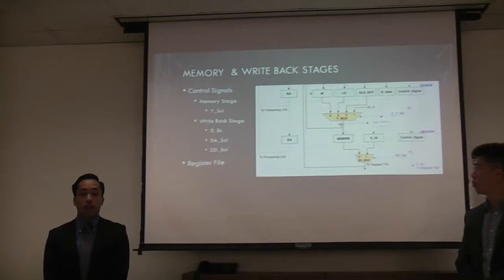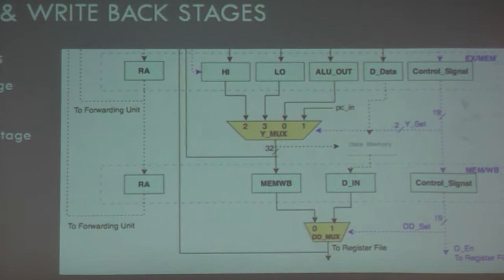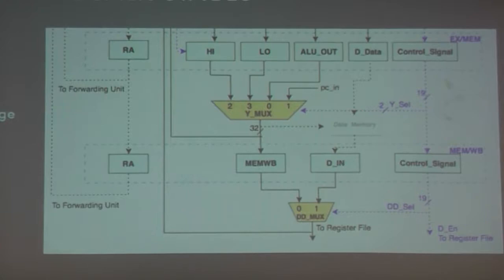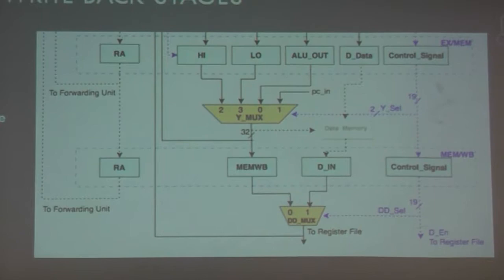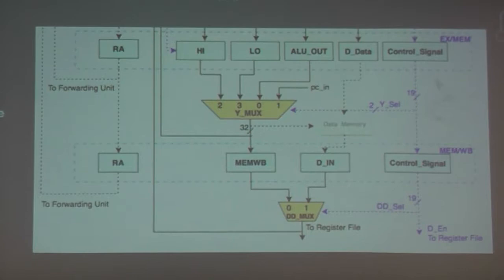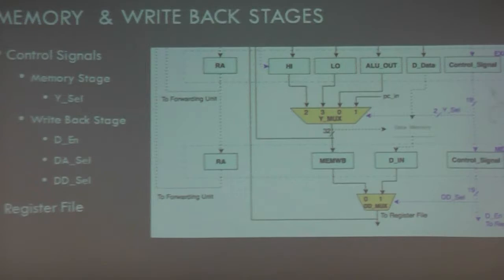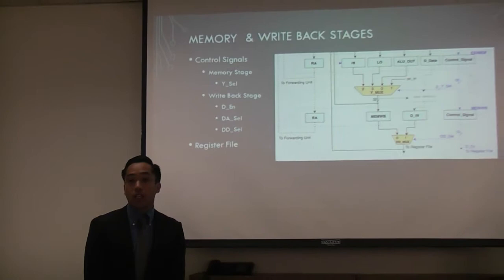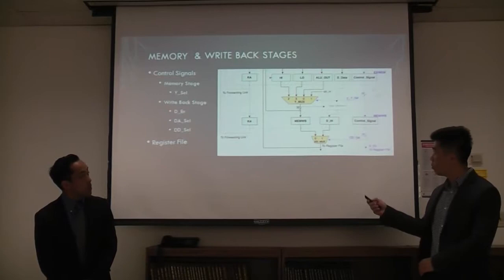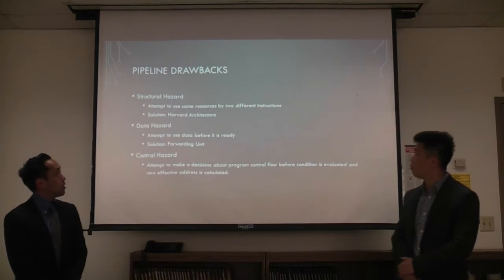The last two stages are memory and writeback. In the memory stage, we're only acquiring data that utilizes the data memory. That information is taken from the D-data register, and any data coming out of data memory is saved to the DIN register. Also notable are two wires in these stages that lead directly back into the execution stage — those wires are used for the forwarding unit.